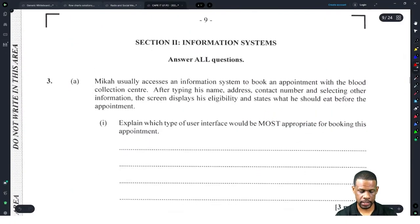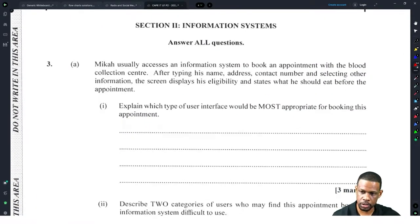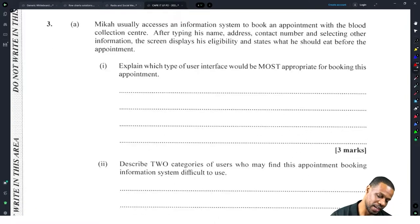Module 2. I heard module 2 was simple but I'm not too sure. Let's see what happens. A blood donor usually accesses an information system to book an appointment with the blood collection center. After typing his name, address, contact number and selecting other information, the screen shows his eligibility and states that he should attend before the appointment. Explain what type of user interface would be most appropriate for booking this appointment. So he typed in his name, his address, his contact number, and then selected other information.